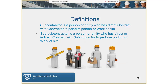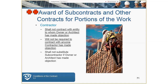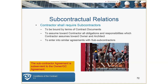Subcontractors are working for the contractor, contracting directly with the contractor to perform portions of the work at the site — sometimes referred to as trade contractors. The architect or owner can object to a subcontractor; however, if this adds cost to the project, the owner may be on the hook for the difference. The subcontractor agreement is subservient to the owner–general contractor agreement, and if you use AIA forms, that subcontract will incorporate the prime contract.